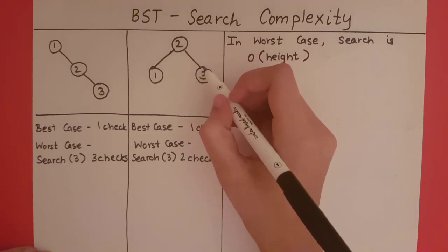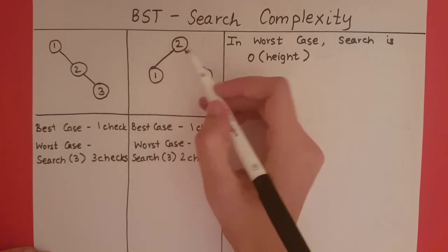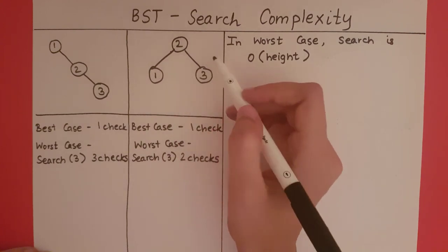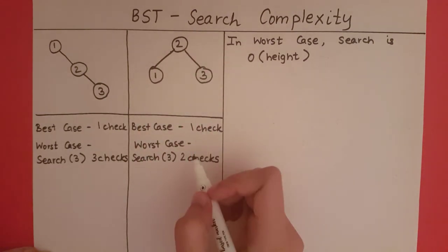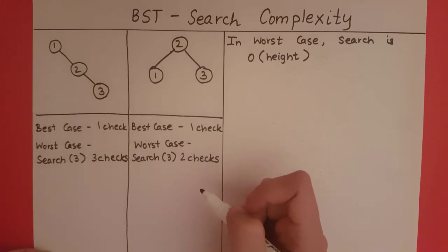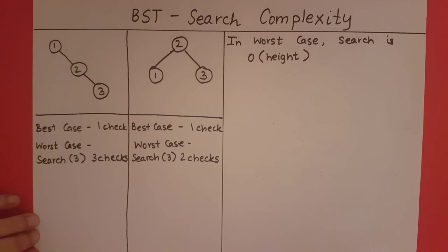For the second tree: the heights of nodes 3 and 1 are both 0. Node 2 has height 1 plus the maximum of 0 and 0, so the height of 2 is 1. The height of the entire tree is 1, and we are making 2 checks — again 1 plus the height. To accommodate this offset of 1, we are going to add a layer of dummy or external nodes, which boosts the height by 1 so that searching is O(height).